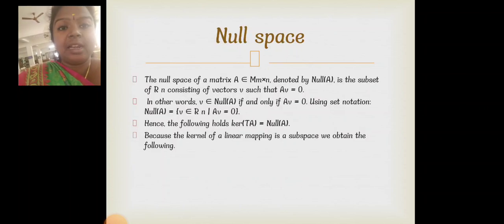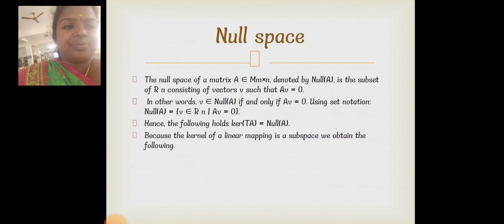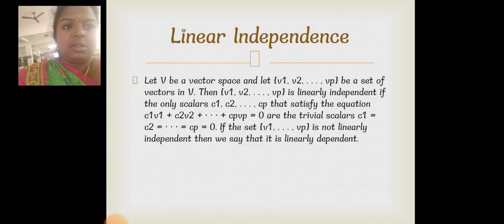The null space definition is also mentioned. The null space of a matrix A in M×N is denoted Null(A). It is the subset of R consisting of vectors V such that A·v = 0.